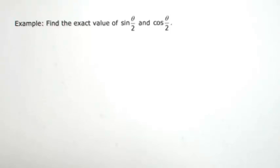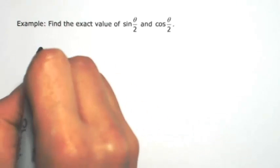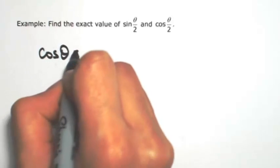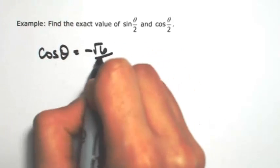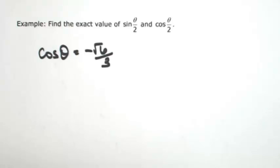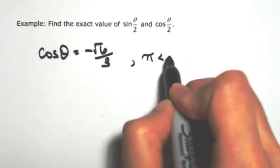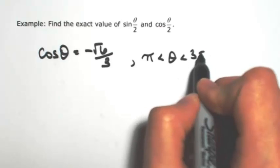Let's find the exact value of the sine and cosine of theta over 2. I'm going to give you some information about theta, and that's that the cosine of theta is negative square root of 6 over 3, and you're also told that theta is between pi and 3 pi over 2.